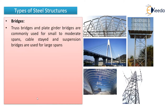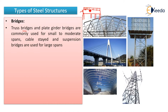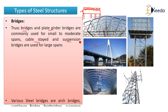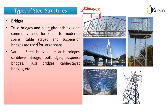We also have normal steel bridges — truss bridges and plate girder bridges are commonly used for small to moderate spans, while cable-stayed and suspension bridges are used for large spans. The various types of steel bridges include arch bridges, cantilever bridges, small foot bridges, suspension bridges, truss bridges, and cable-stayed bridges.